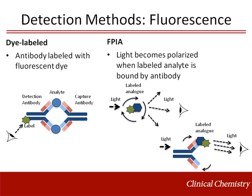Another common type of fluorescent immunoassay is a fluorescence polarization immunoassay that uses fluorescently labeled analogs rather than a labeled antibody. When the labeled analog is unbound by antibody, it is free to rotate and there is low polarization of light. When the labeled analog becomes bound by antibody, its rotation is slowed by the mass of the antibody and there is an increase in polarized light. The change in polarization is directly proportional to the amount of analyte in the sample.